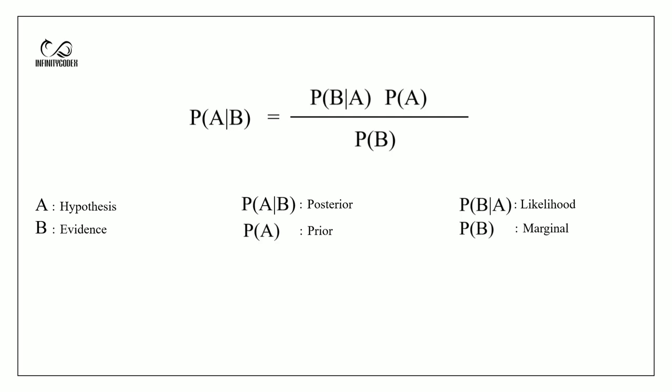The probability of A given B is called the posterior, and the probability of B given A is called the likelihood. The probability of A is called the prior, and the probability of B is called the marginal.